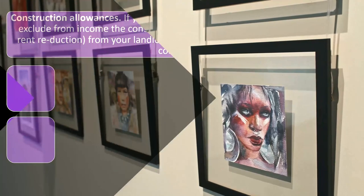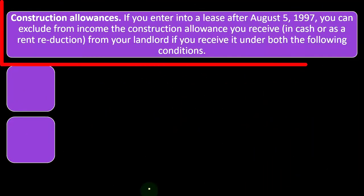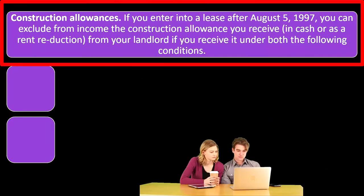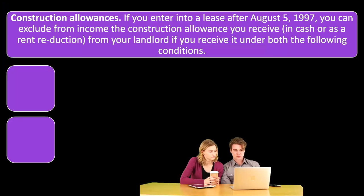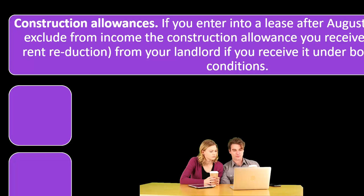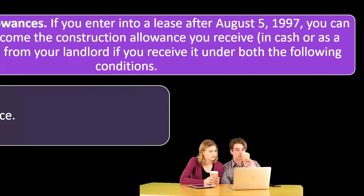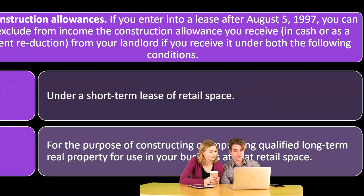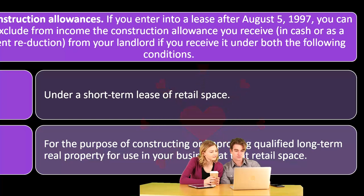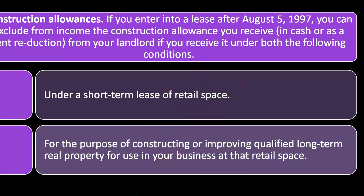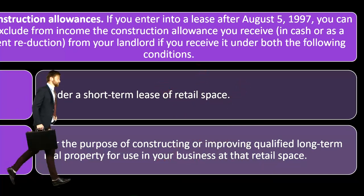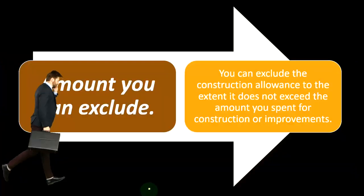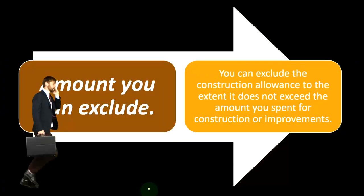Construction allowance: if you enter into a lease after August 5th, 1997, you can exclude from income the construction allowance you receive in cash or as a rent reduction from your landlord, if you receive it under both of the following conditions — under a short-term lease of retail space for the purpose of constructing or improving qualified long-term real property for use in your business at that retail space. That's a pretty special kind of situation for a specific industry.